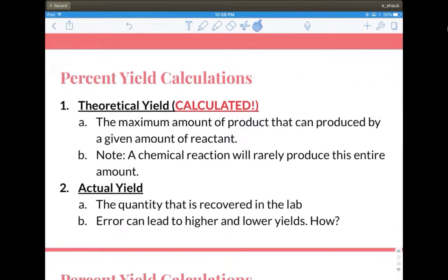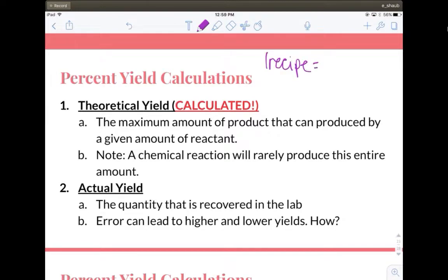So percent yield is how good of a job you actually do in your experiment. The best way to explain this before I talk about the two types of yield is by making cookies again. So let's say your recipe, if you have one recipe for chocolate chip cookies and you were supposed to make two dozen cookies, you would assume then that you would make all two dozen cookies. However, let's say you accidentally dropped some batter on the floor or you just couldn't resist and you ate some of the dough. You are not going to make all two dozen cookies if you lose some of your batter.